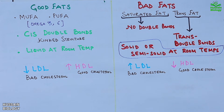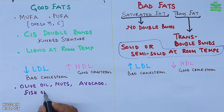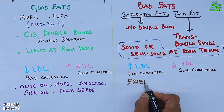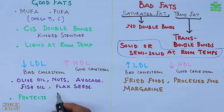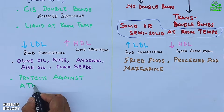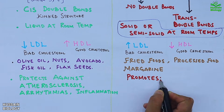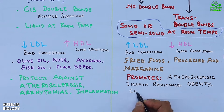Good fat sources include olive oil, nuts, avocado, fish oil, and flax seeds, while bad fat sources are fried food, processed food, and margarine. Clinically, good fats protect against atherosclerosis, arrhythmias, and inflammation, whereas bad fats promote atherosclerosis, insulin resistance, obesity, and coronary artery disease.